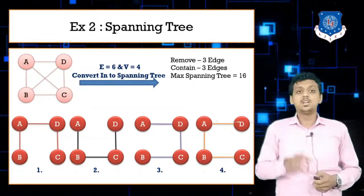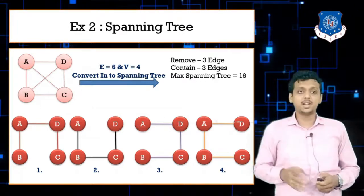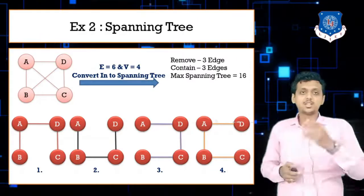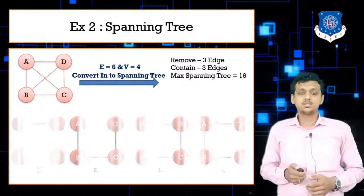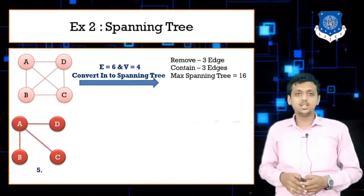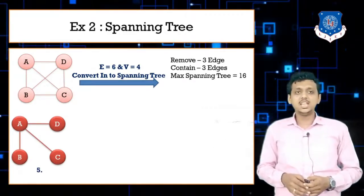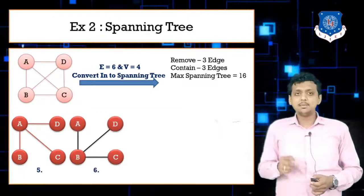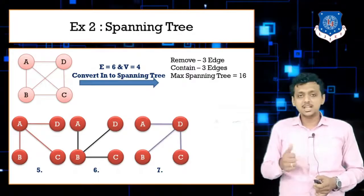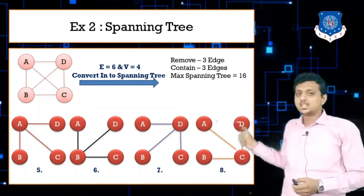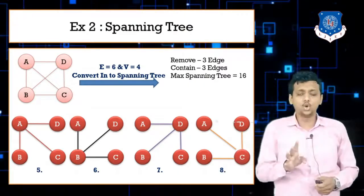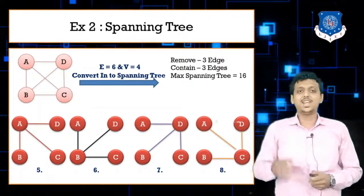Continuing, spanning trees 5 through 8: number 5 is A-B, A-D, A-C (a star from A); number 6 is A-B, B-D, B-C (a star from B); number 7 is A-D, B-C, A-C (or similar configuration); number 8 is C-D, C-A, C-B (a star from C). So here are another 4 spanning trees, giving us 8 total so far.